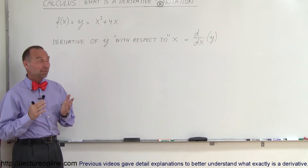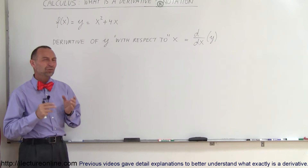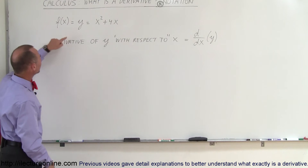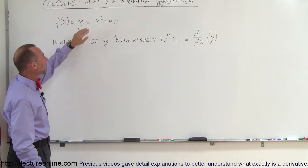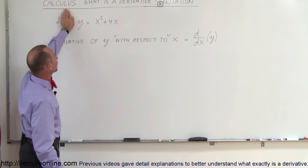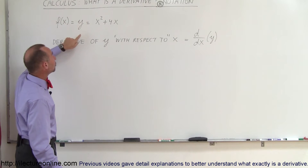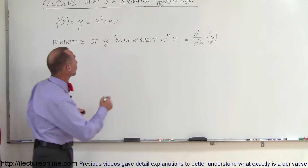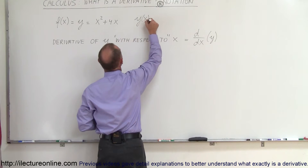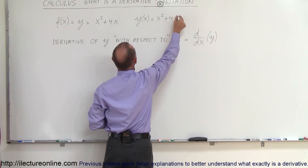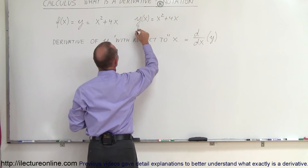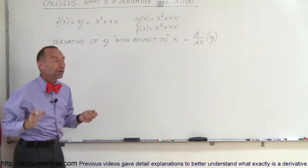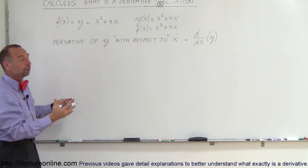Welcome to our lecture. We're going to talk about notation, because notation is really important in understanding what it means and what it stands for. We have a function f of x equal to y equals x squared plus 4x. Sometimes we see it as y equals x squared plus 4x, and when you see it like that you know the dependent variable is y and the independent variable is x.